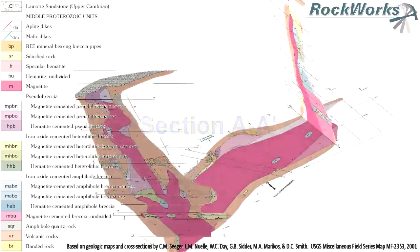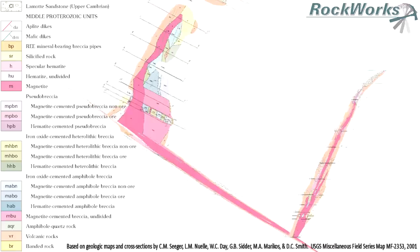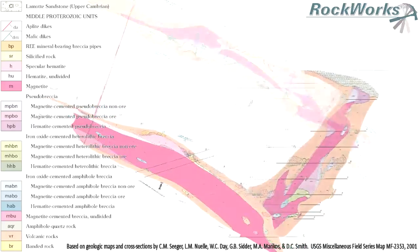St. Joseph Lead Company drilled this magnetic anomaly as part of their lead-zinc exploration program and discovered a large magnetite hematite body.